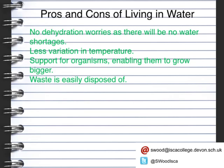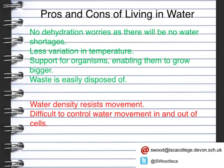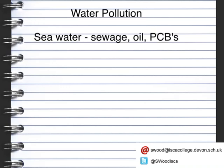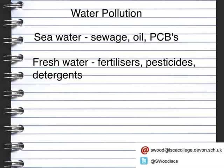Disadvantages include the water density will resist any movement, and control of water going in and out of cells can be difficult. Water pollution can come from a variety of different things. Seawater can be polluted by sewage, oil, and PCBs — polychlorinated biphenyls — which are used in manufacturing electrical equipment, heat exchangers, and hydraulic systems. Rivers and lakes or fresh water can be polluted by fertilizers, pesticides, and detergents.